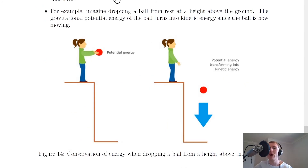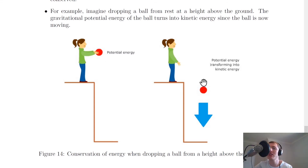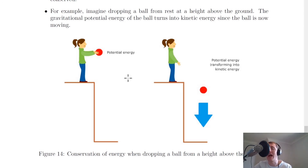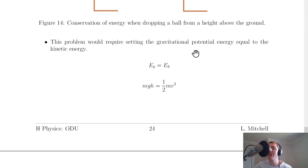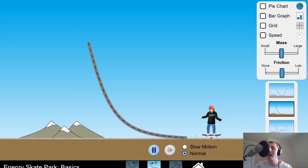Here's a simple example: imagine dropping a ball from rest at a height above the ground. The gravitational potential energy of the ball turns into kinetic energy as the ball moves. Potential energy is simply any type of stored energy — you can have elastic potential energy in an elastic band, or chemical potential energy in food or a battery. In this example, the problem requires setting Ep equal to Ek, or writing mgh = ½mv², and rearranging for the unknown quantity.